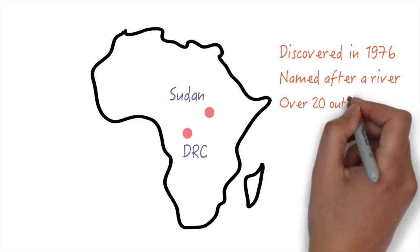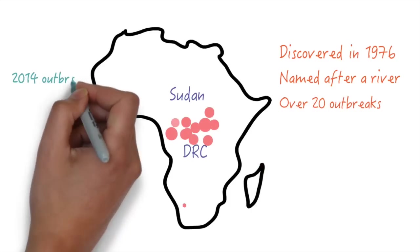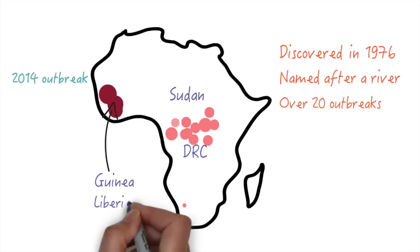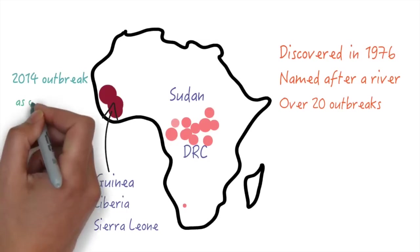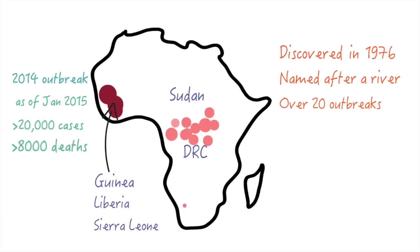Since then, there have been over 20 Ebola outbreaks in Africa. The one that started in 2014 and is currently affecting the West African countries of Guinea, Liberia, and Sierra Leone has been the largest outbreak ever, bigger than all the outbreaks combined. By the end of January 2015, there were over 20,000 cases and over 8,000 deaths.